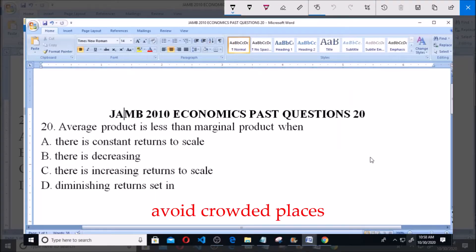Hello, JAMB 2010 Economics question number 20: Average product is less than marginal product when... AP is less than MP.